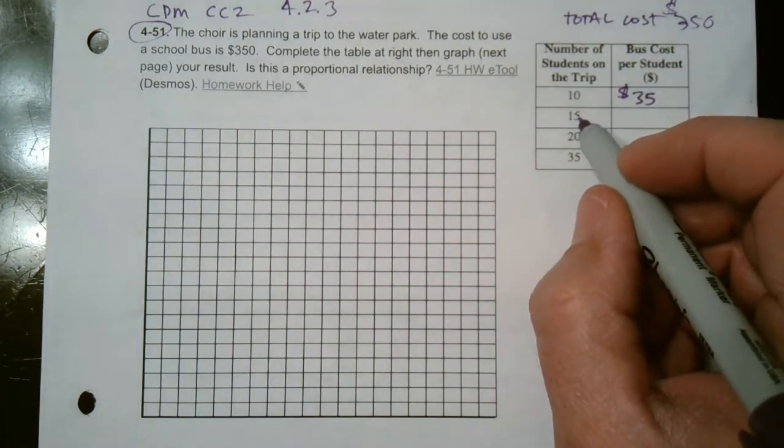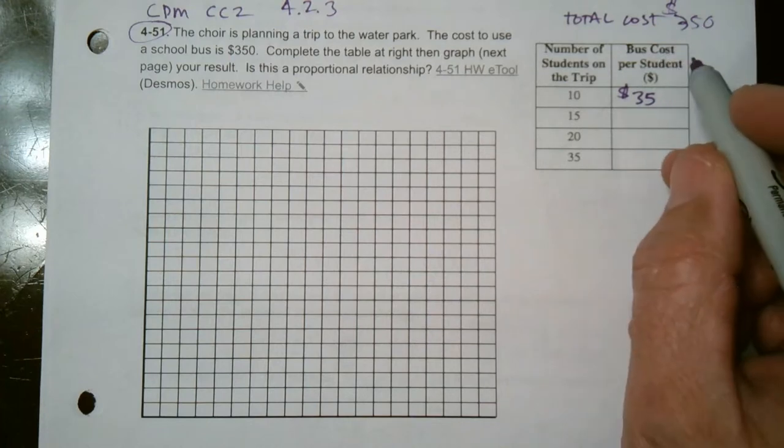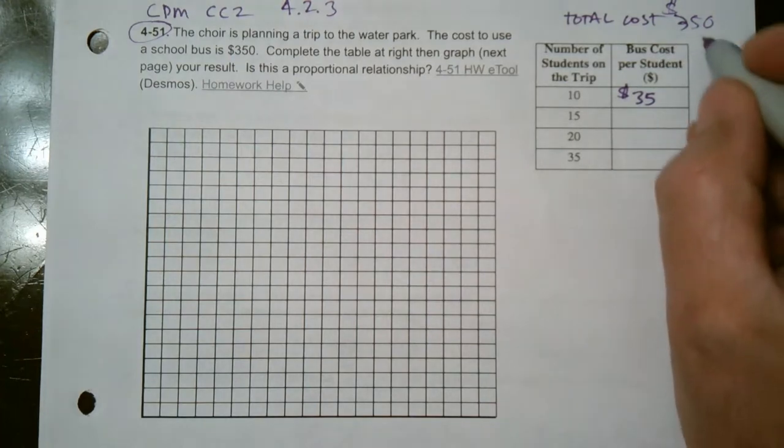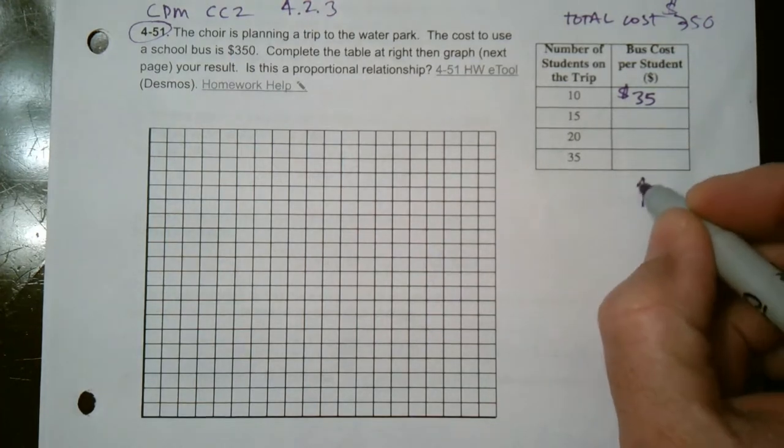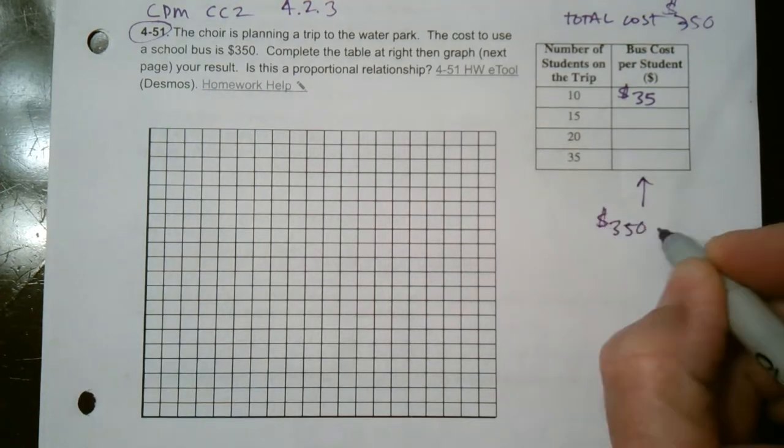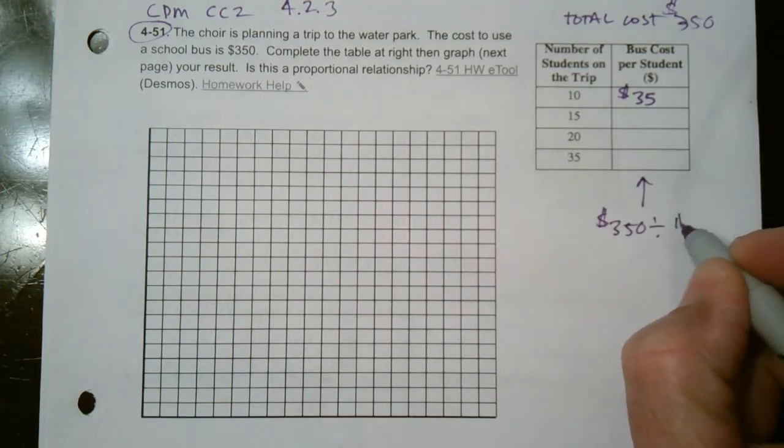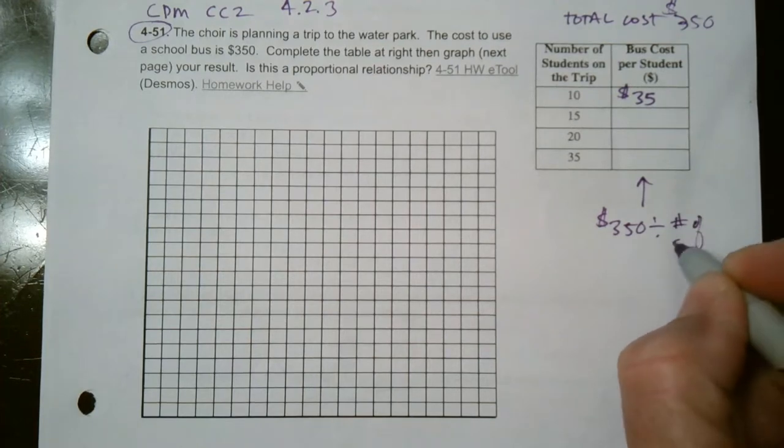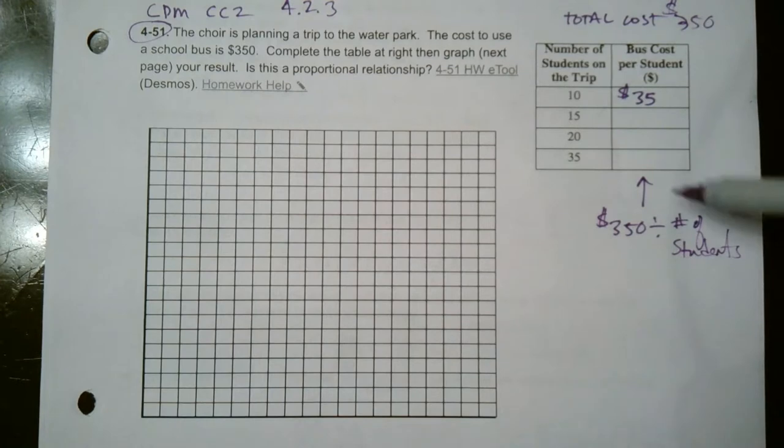What if there was 15? Again, we do the division. So each time to do this, I'm taking $350 and dividing by the number of students to determine the cost per student.